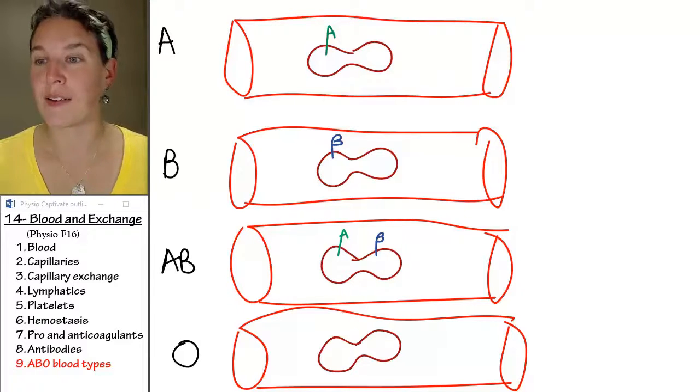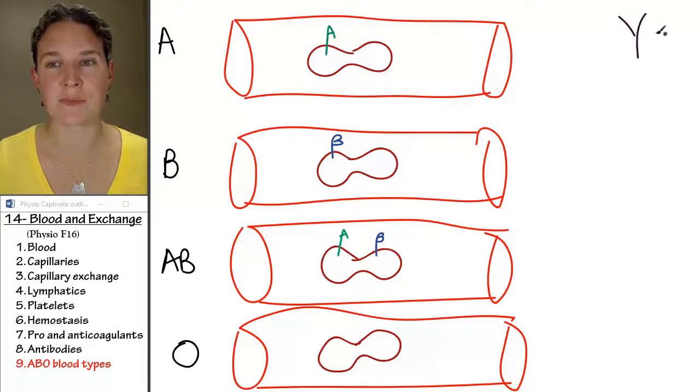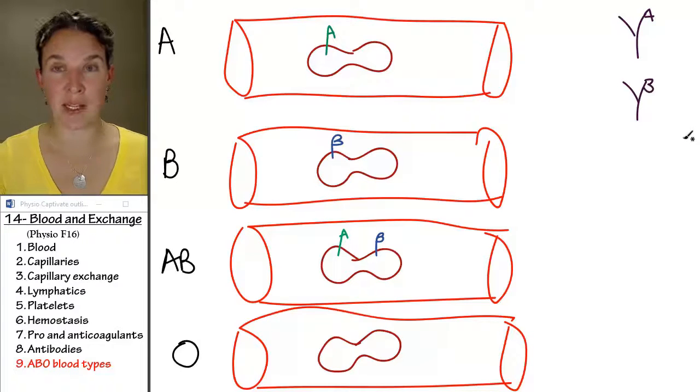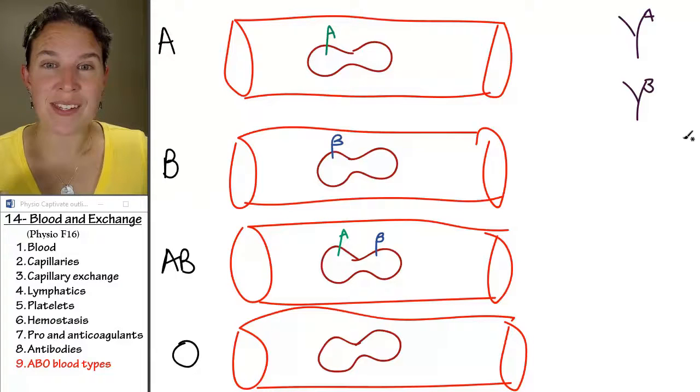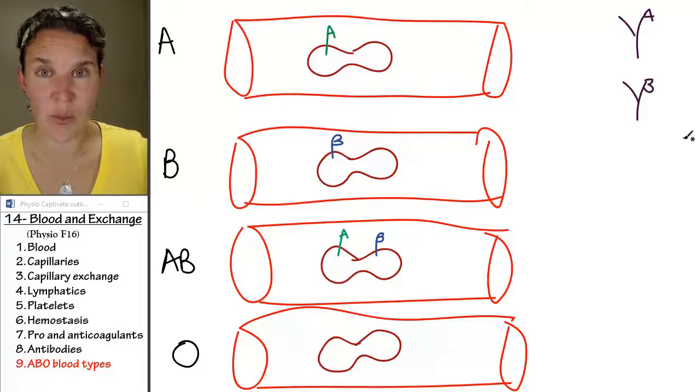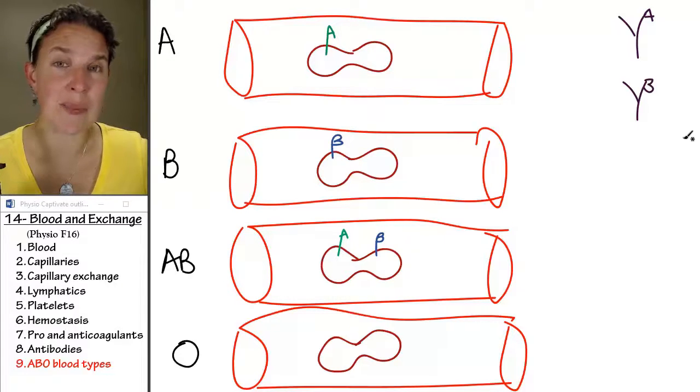You have a couple of antibody options. You can have type A antibodies and you can have type B antibodies. Now, type A antibodies are going to match with type A antigens. That makes perfect sense, right? A type A antibody is going to bind to a type A antigen.